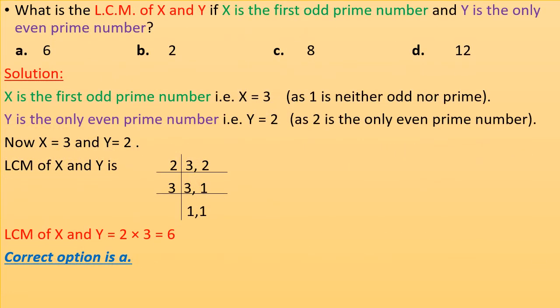What is the LCM of x and y if x is the first odd prime number and y is the only even prime number? X is the first odd prime number, so x = 3, since 1 is neither odd nor prime. Y is the only even prime number, so y = 2. LCM of x and y is 2 × 3 = 6. Correct option is A.